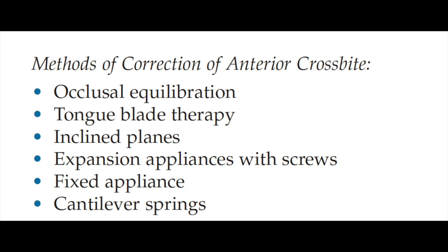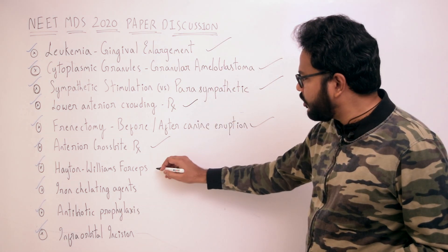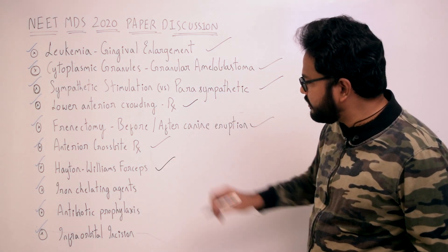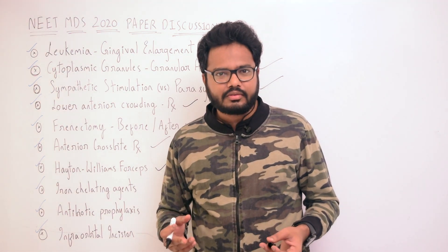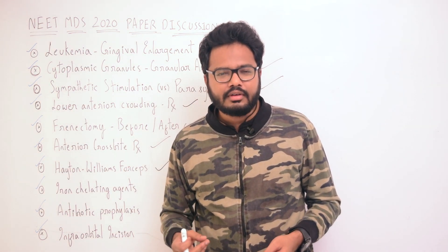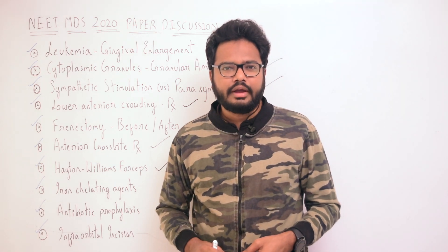The next topic is Hayton-Williams forceps, which was an image-based question asked in your entrance exam. Hayton-Williams forceps is a disimpaction forceps which can be used to reduce a fractured maxilla, as shown in the image.